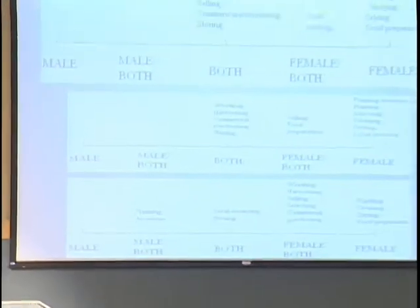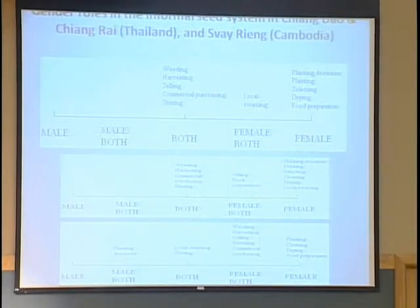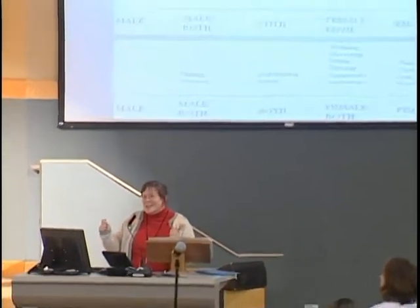Looking at gender roles in the informal seed system across Chiang Dao, Chiang Rai in Thailand and Svay Rieng in Cambodia: we had a very simple way of determining gender distinctions in parts of the seed process. Everyone had a card with a picture of a woman and a picture of a man. When we asked about planting decisions, you could place one card, the other, or both. Easiest data collection we've ever done, and also some of the most surprising results — the Thai and ethnic group extension workers we were working with were very surprised by the data. The results were very heavily weighted toward the female side, even in planting decisions, planting, selecting seeds, drying, and food preparation.